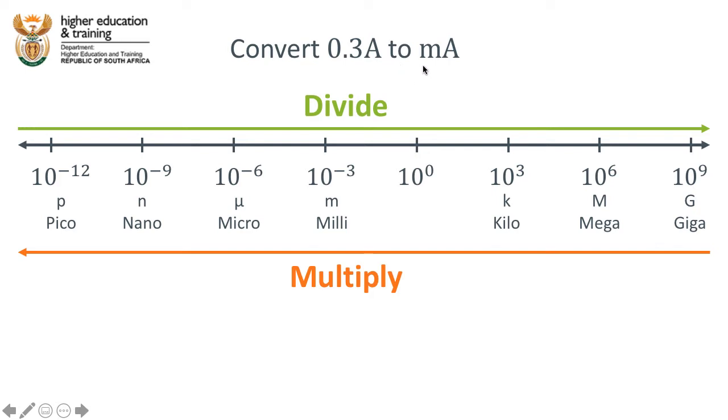Now this is a fairly simple example that you might not need to use this number line for. You might be able to know that to get from amps to milliamps we need to divide by 1000.